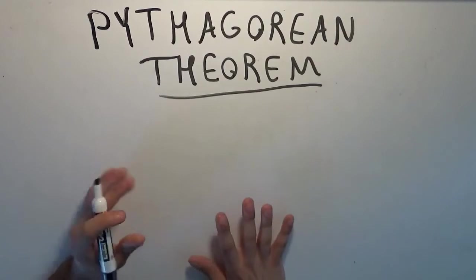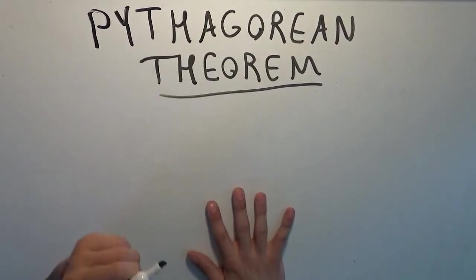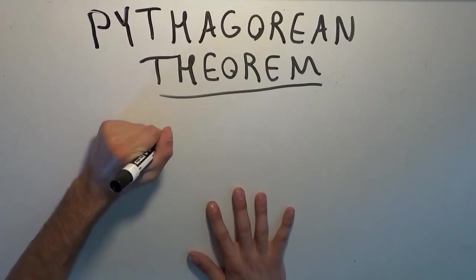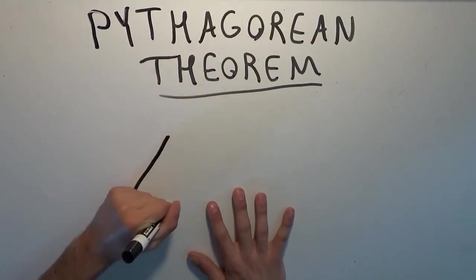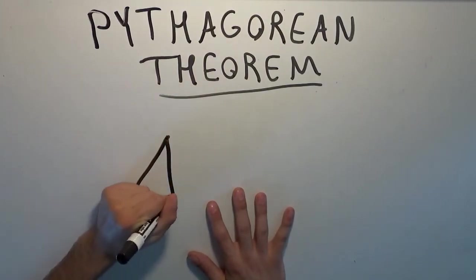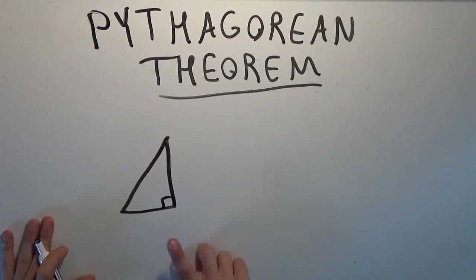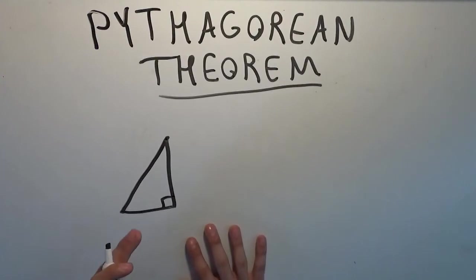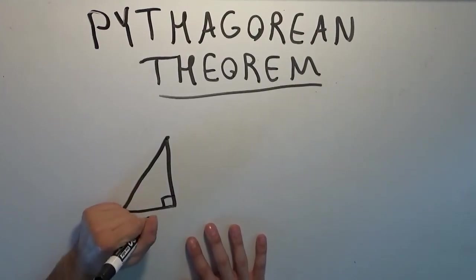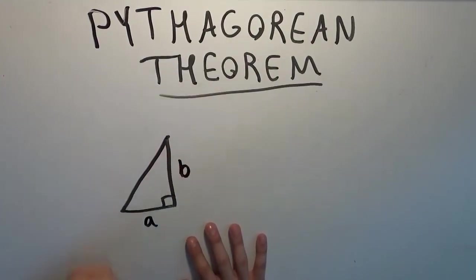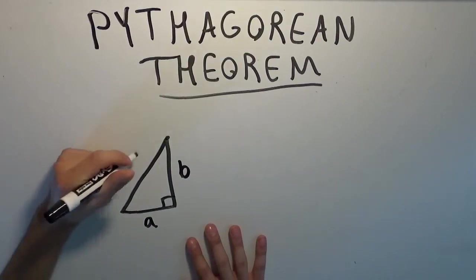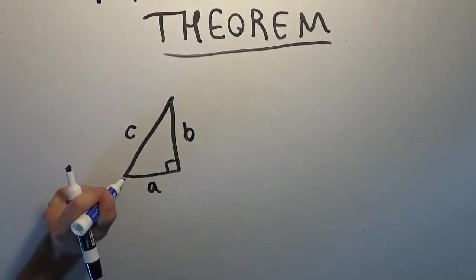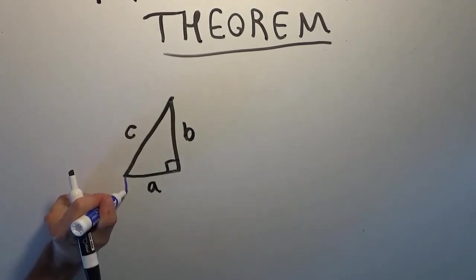So the Pythagorean Theorem states that if you are given a right triangle — just like in trigonometry, we're sticking with right triangles — so if you are given a right triangle, a triangle with a right angle in it, and you label the sides of the triangle, the two legs A and B, and the hypotenuse C,